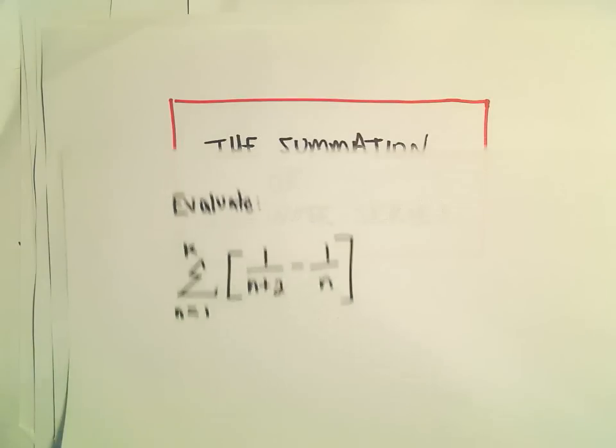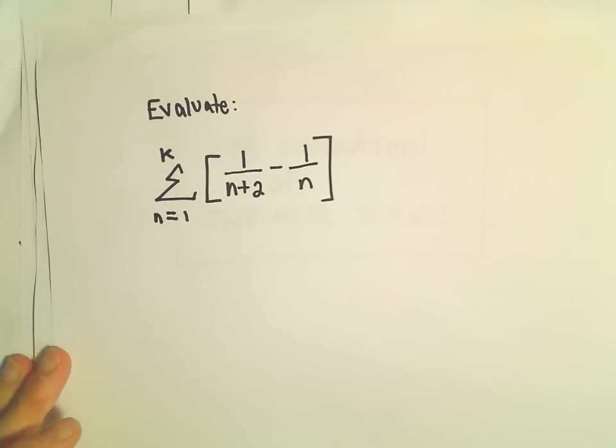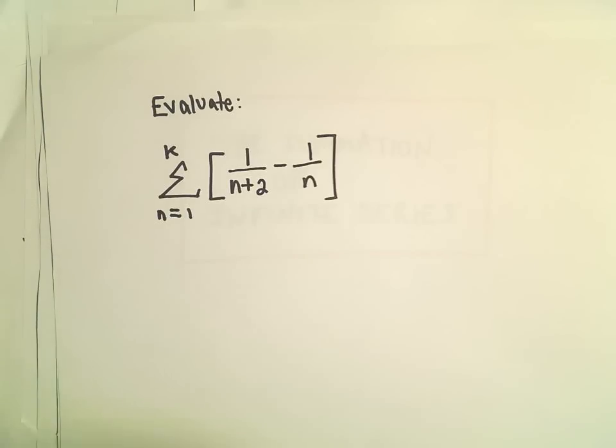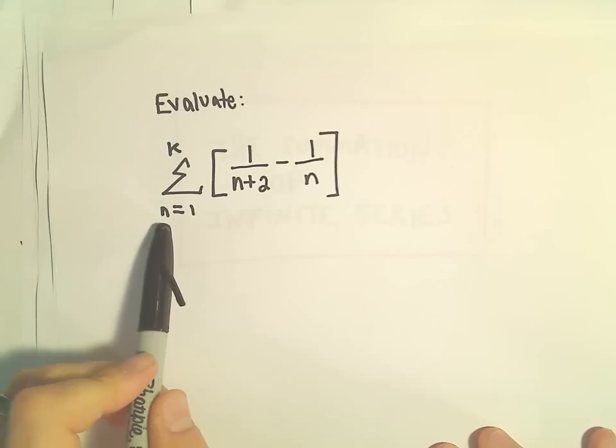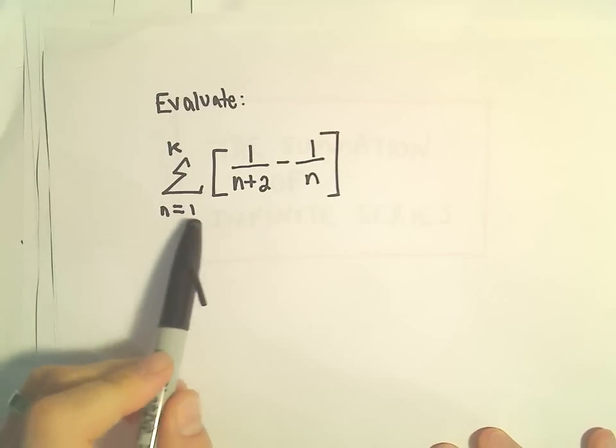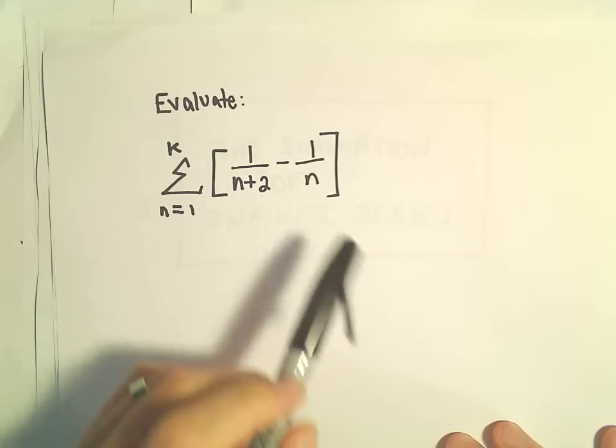Alright, in this video we're going to look at a problem that's sort of a step towards evaluating an infinite series, or one of the ideas to do so. And what we'll do is we're just going to sum up a series, kind of generically, from n equals 1 up to some value k, 1 over n plus 2 minus 1 over n.